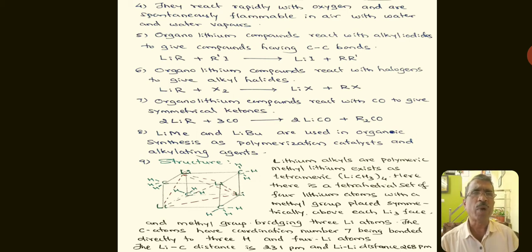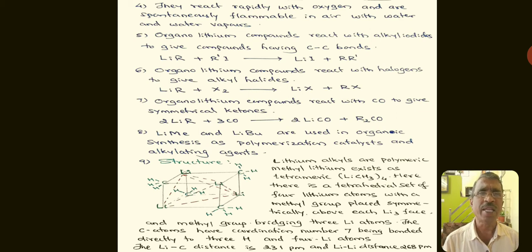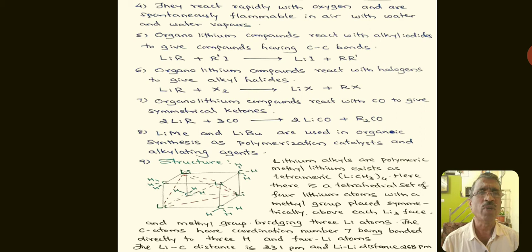Organolithium compounds react with halogens to give alkyl halides. When methyl lithium is treated with a halogen, we get methyl halide and lithium halide.